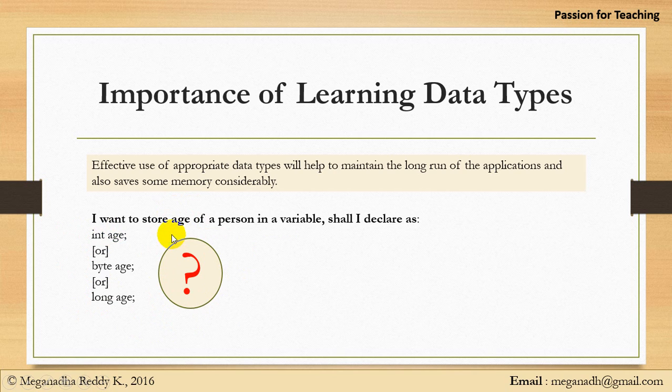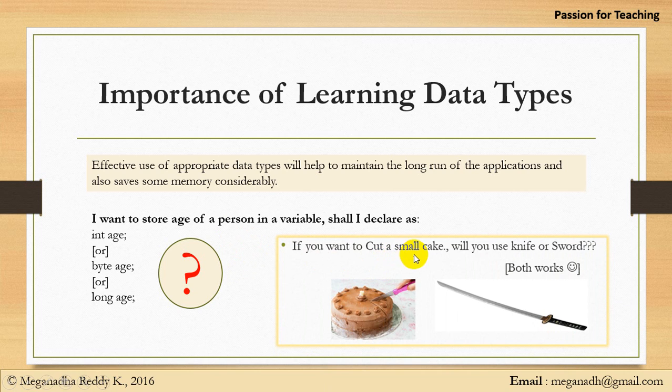So, to make it clear, let me give you one real-time example. If we want to cut a small cake, will you use a knife or a sword? Both will work but unnecessarily we are spending extra money and also we will face difficulties with this rather than this is simple. Similarly, here if you can store in a small data type, you can store age of a person, it's always good to go for that respective data type instead of going for a long data type. That makes some considerable comparison.